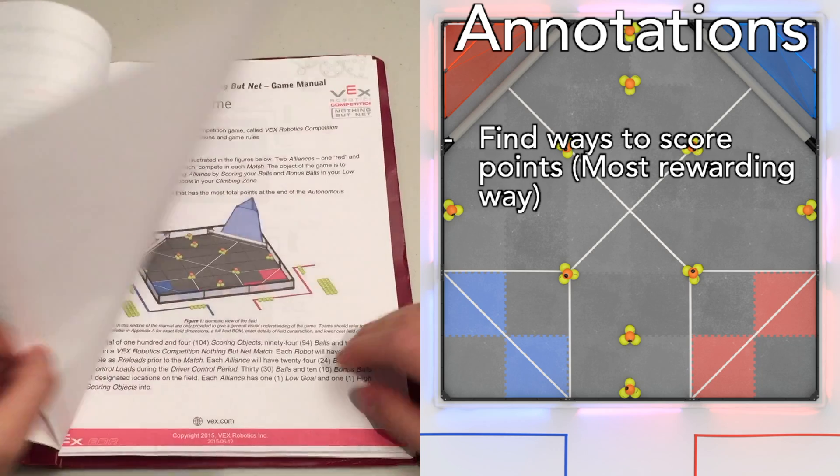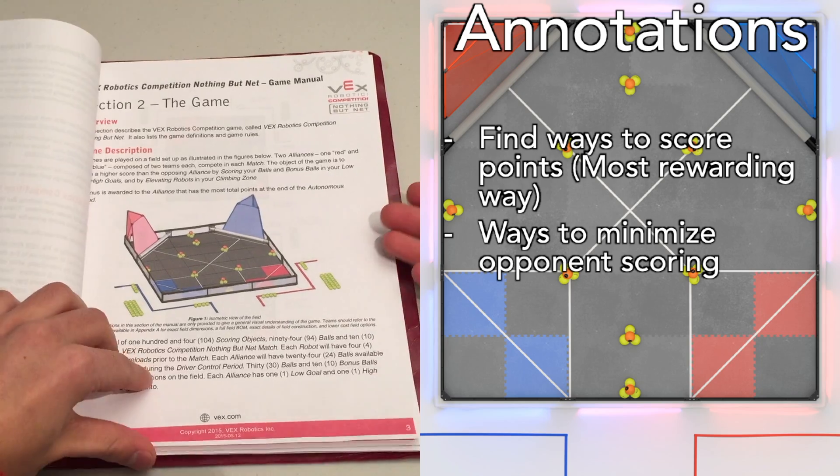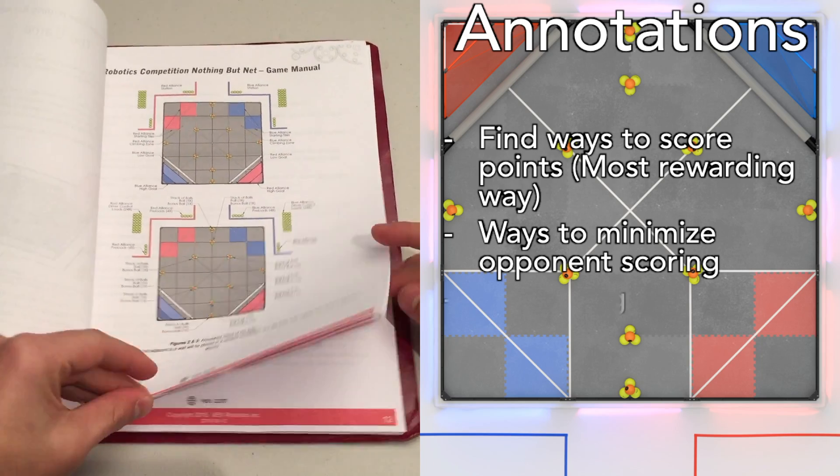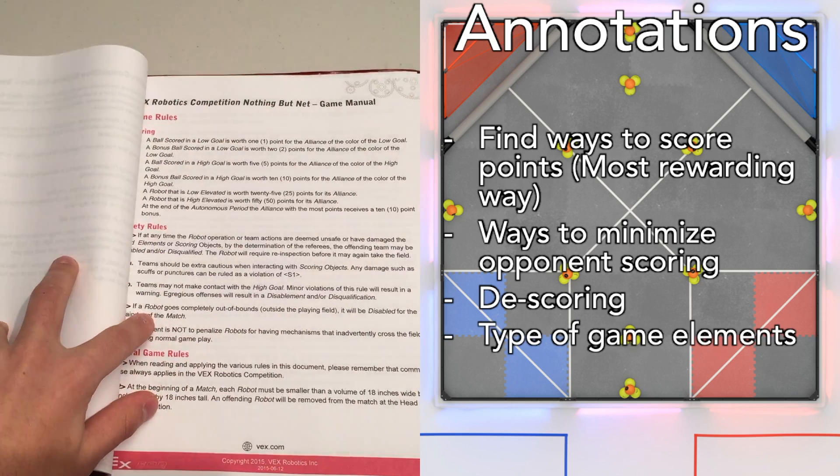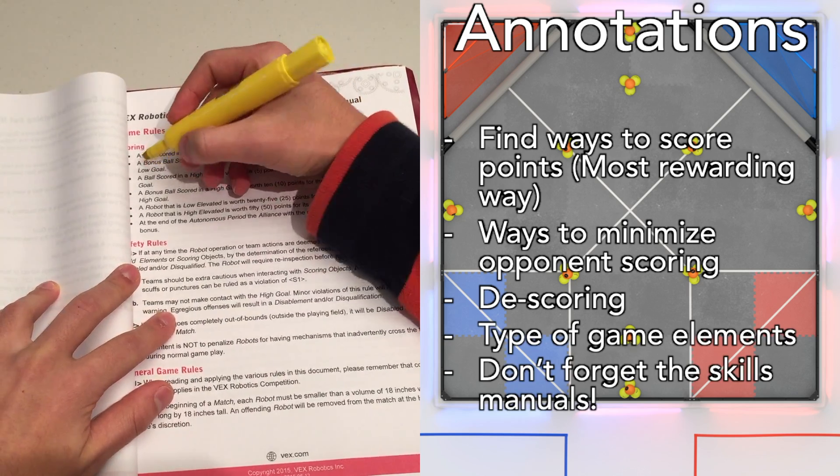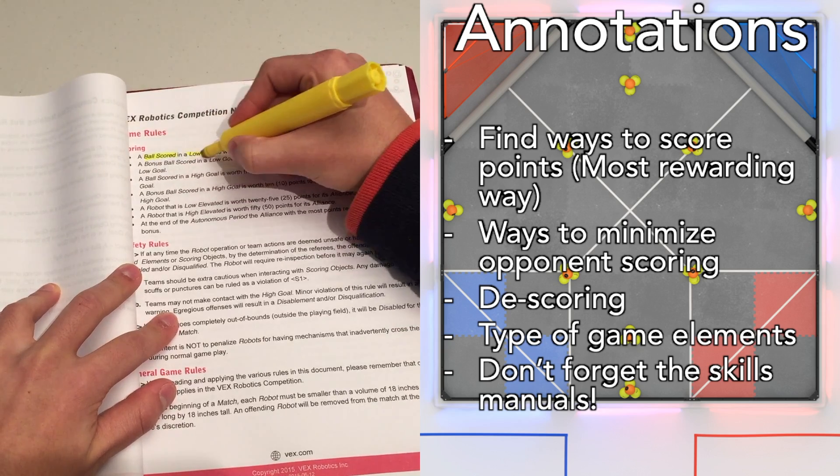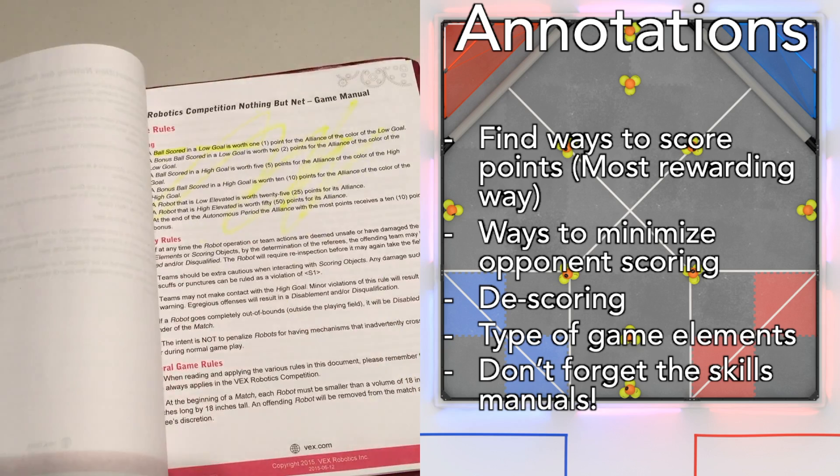Highlight and understand all the ways to score points. Make sure to mark down the most common way to score points, as well as the most rewarding way. Remember to do this for the robot and programming skills manuals as well. It is also beneficial to note different ways to stop your opponent from descoring, or any ways to descore your opponent's already scored game elements.